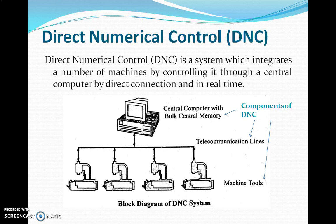Direct numerical control is basically a system which integrates a number of machines by controlling them through a central computer by direct connections and in real time. As you can see in the block diagram, the different components of DNC include the central computer, bulk memory, telecommunication lines, and machine tools.